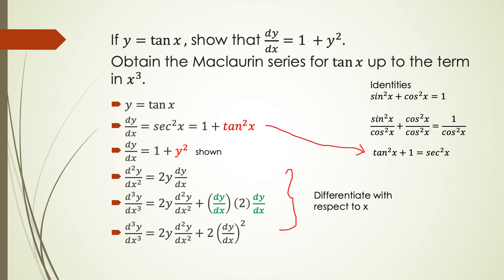Recall the trigonometry identity: sin²(x) plus cos²(x) equal to 1. We divide all terms by cos²(x). Then we simplify the equation to obtain tan²(x) plus 1 equal to sec²(x). We convert sec²(x) equal to 1 plus tan²(x). Since y equal to tan(x), tan²(x) equal to y². So now we have the new equation dy over dx equal to 1 plus y².